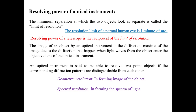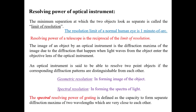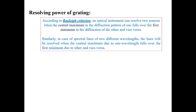One class is geometrical resolution, used in forming the image of an object. The second is spectral resolution, used in forming the spectra of light. The spectral resolving power of a grating is defined as the capacity to form separate diffraction maxima for two different wavelengths which are very close to each other. To find the resolving power of any instrument, Rayleigh's criterion is used.